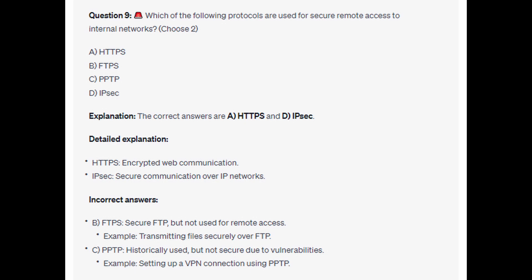For the incorrect answers: FTPS is a secure FTP protocol but is not used for remote network access — an example would be transmitting files securely over FTP. PPTP was historically used but is not secure due to known vulnerabilities — an example would be setting up a VPN connection using PPTP.